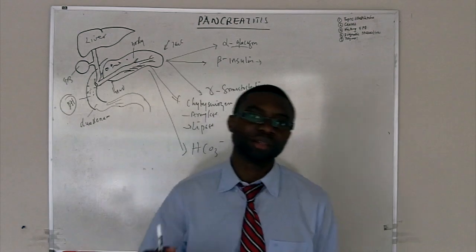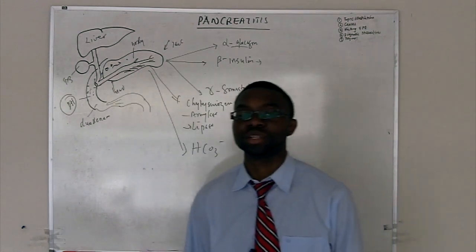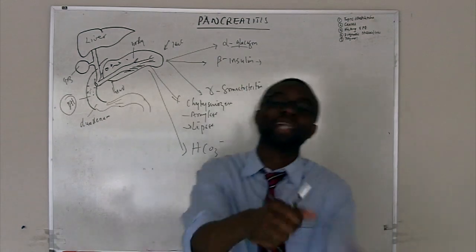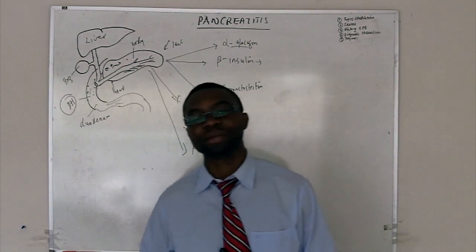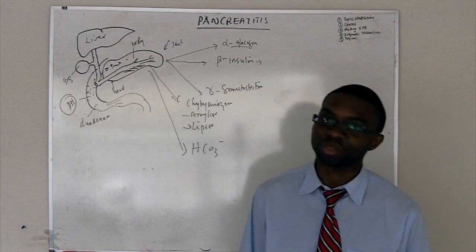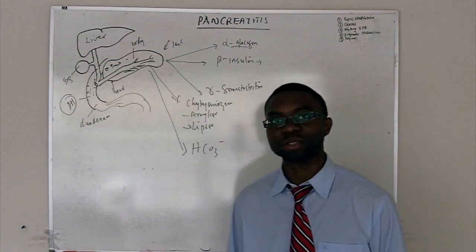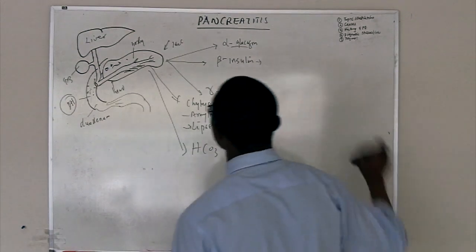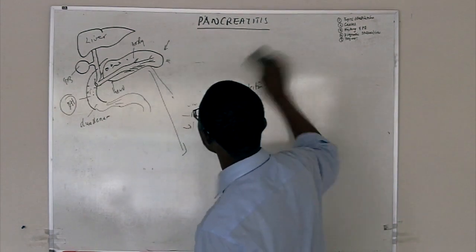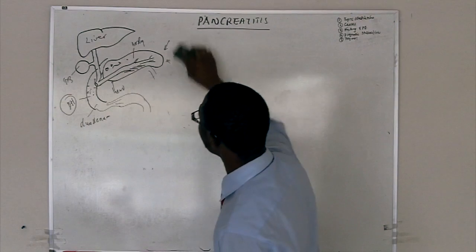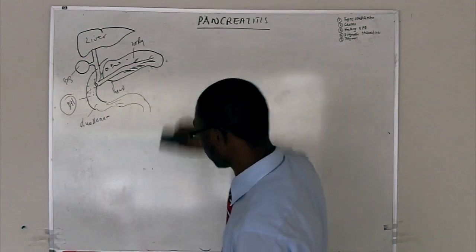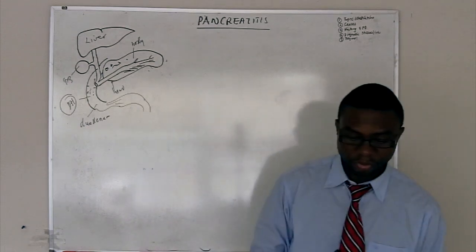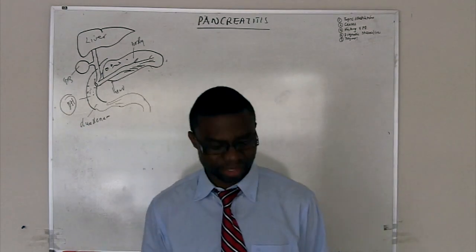However, sometimes the pancreas gets injured. It's working too hard. Something hits it. It becomes inflamed. That's what brings us to this chapter called acute pancreatitis. Now that we know what the pancreas does, wouldn't it be nice to see what happens to it when it's not in a good mood?